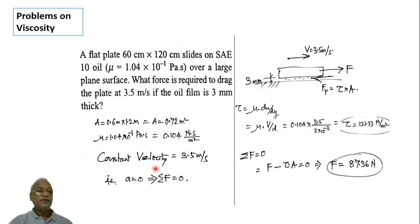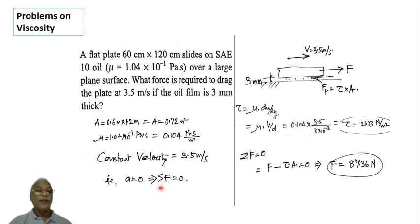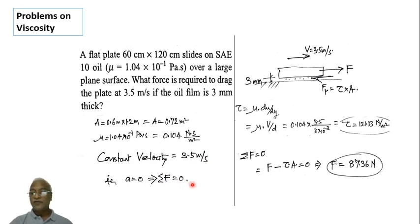Since the velocity is constant, acceleration is zero. By Newton's second law (F equals m into a), if acceleration is zero, the total force sigma F equals zero. This means the applied force must exactly balance the resistive viscous force.